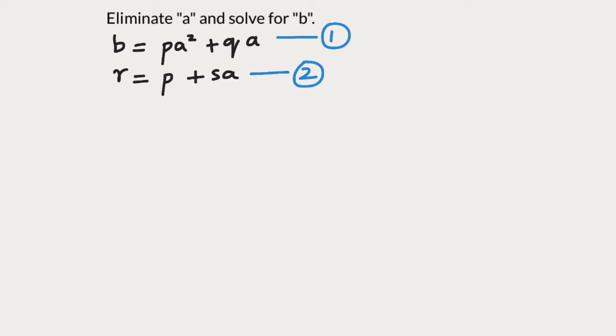We need an equation for B, which we already have in equation 1, but it is in terms of A. A is present here as A squared and in the second term as A. We need to get rid of this A so that we have an equation for B that does not have A in it.